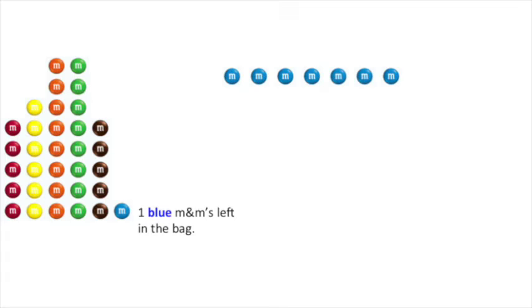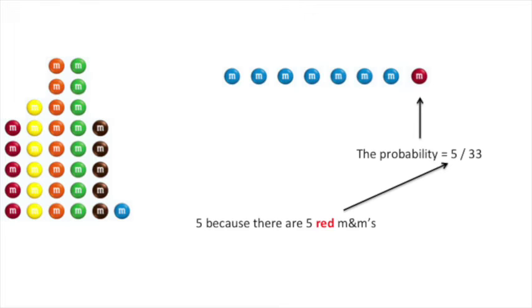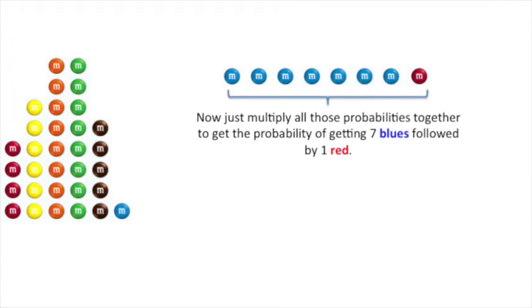Once we have calculated the probabilities for getting 7 blue M&Ms in our hand, we can now calculate the probability of getting 1 red M&M. That's just 5 over 33. 5 because there are 5 red M&Ms divided by 33 because there are 33 M&Ms left in the bag at this point. Now just multiply all those probabilities together to get the probability of getting 7 blues followed by 1 red. And that just equals a really small number.